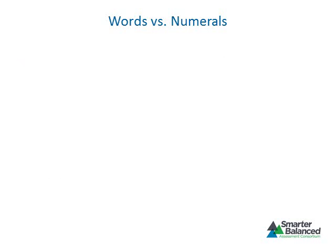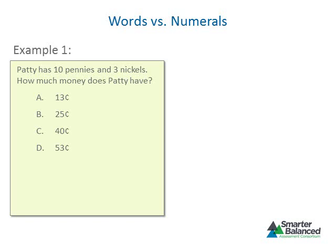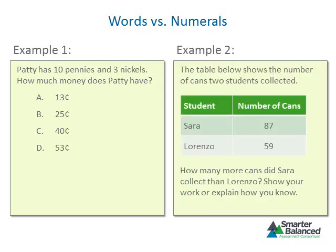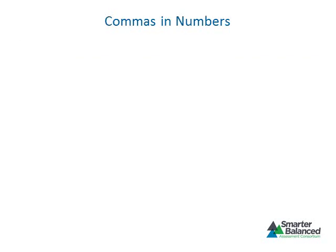Let's look at two examples. In the first example, the student will use the numbers to perform a computation. For this reason, the numbers 10 and 3 are both presented as numerals in the stem. In the second example, the number 2 is describing the number of children but will not be used to perform a computation. Since the number 2 is less than 10 and is not being used in a computation context, it is presented as a word rather than a numeral.